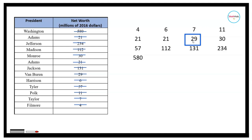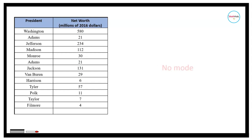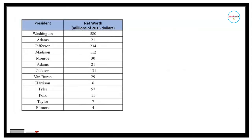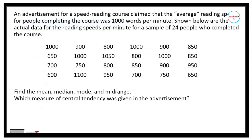Counting to the seventh position: 1, 2, 3, 4, 5, 6, 7 — the median is equal to 29. Looking at the data entries, all values are unique, so there is no mode in this data set. For the mid-range, we average the lowest value (4) and the highest value (580): 4 plus 580 divided by 2 equals 292 million dollars.